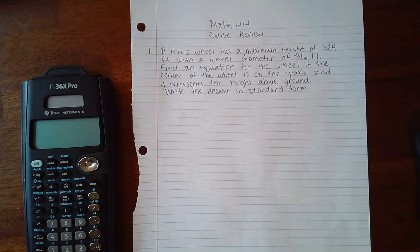So the first question in there I have written as: A Ferris wheel has a maximum height of 324 feet with a wheel diameter of 316 feet. Find an equation for the wheel if the center of the wheel is on the y-axis.